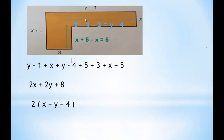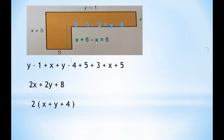To find the first missing side: the full length is y minus 1 and the known portion is 3, so we compute (y-1) minus 3, giving y minus 4. For the other missing side: the full vertical length is x+5 and the known portion is x, so (x+5) minus x — the x terms cancel — leaving 5. So the two missing sides are y-4 and 5.